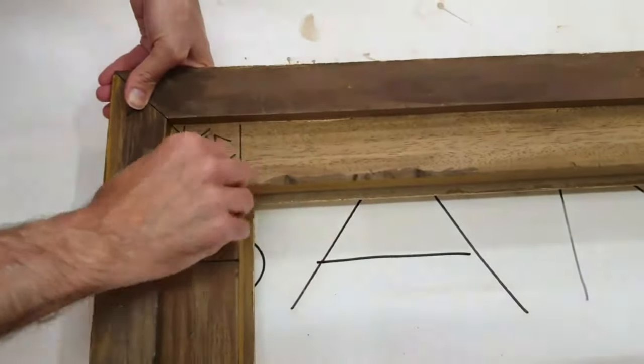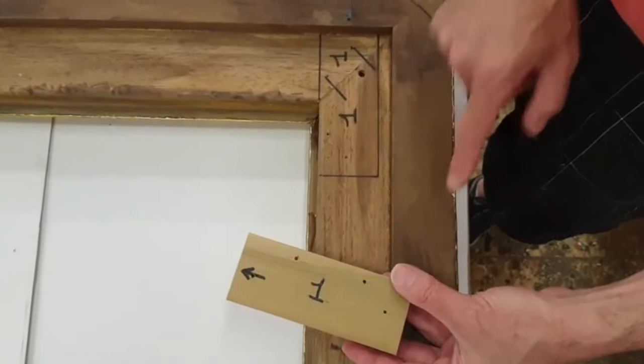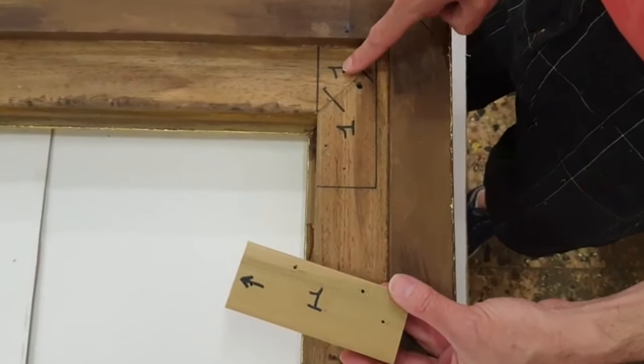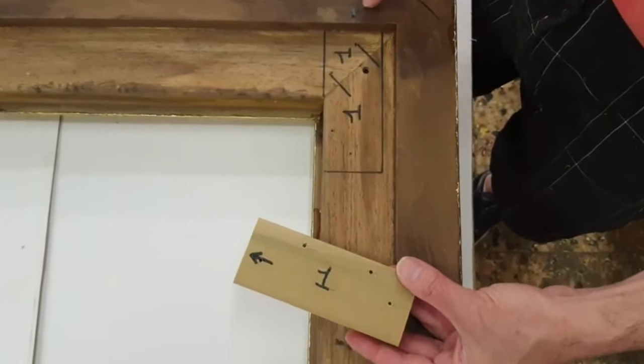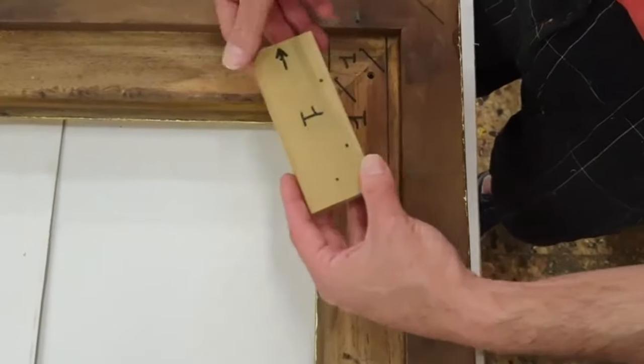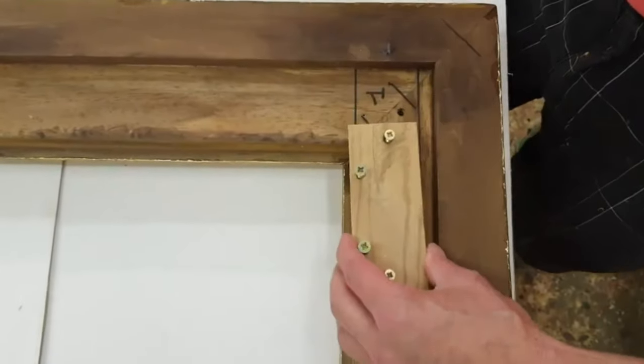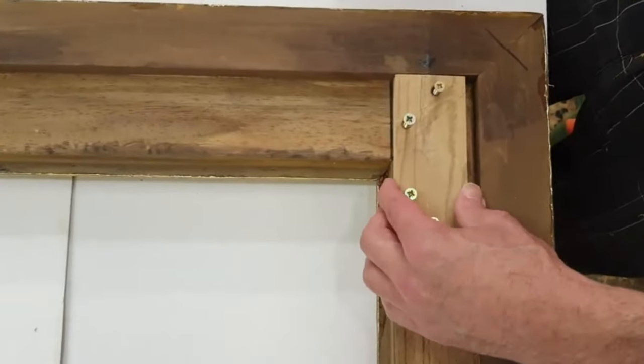Once the four corners have been joined, we proceed to strengthen them using four wooden tablets prepared to be screwed on the joint.